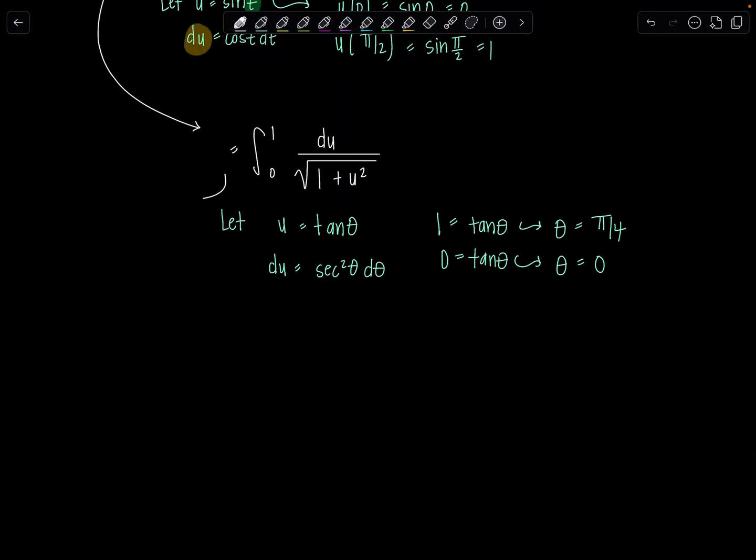Okay so then now after the trig sub what do we have? We have integral from zero to pi over four. Du in the numerator is all of this. Secant squared theta d theta over square root one plus u squared that's tan squared theta.